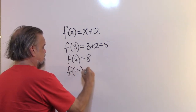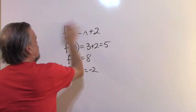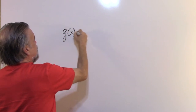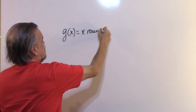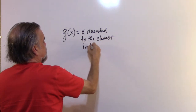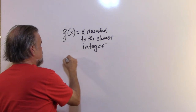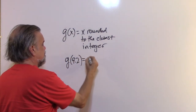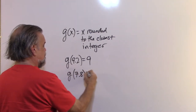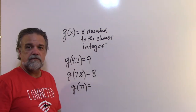And f(-4) = -4 + 2 = -2. For g(x) — remember g(x) was x rounded to the closest integer — g(9.2) = 9, g(7.8) = 8, and g(π) = 3.